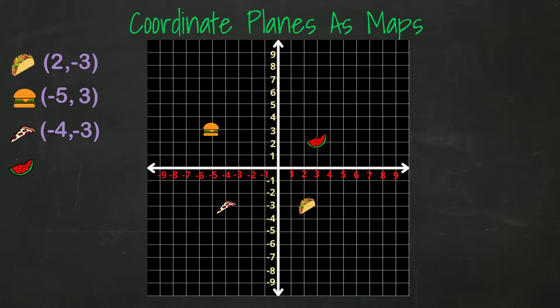Finally, what are the coordinates for the watermelon? It's located in quadrant 1, meaning both x and y values will be positive. We move to the right of the origin three places, and then up two. The coordinates are positive 3, positive 2.